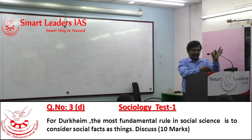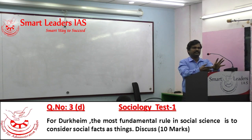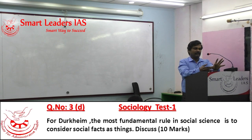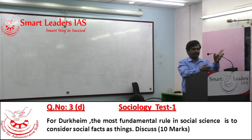Durkheim says when you treat social facts as things, you are observing — and observation is impersonal observation. Observation should not involve interpretation; observation should be supported by empirical data and it should be unbiased.